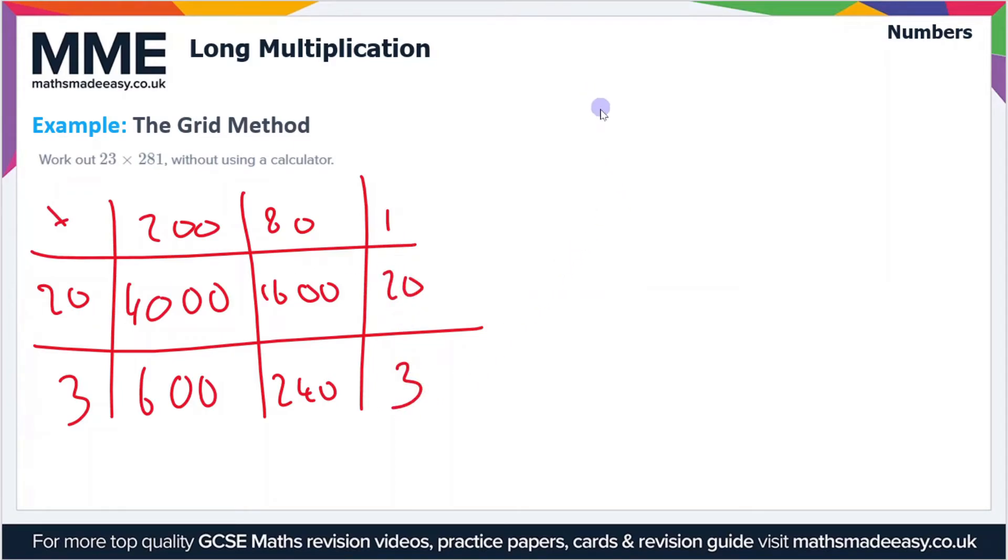If we sum all of these up, we've got 4,000, 1,600, 600, 240, 20, and 3. So the sum of this far right column is 3, and the sum of the middle column here is 4 plus 2 is 6. Then we have 6 plus 6 plus 2—so that's 12 plus 2, which is 14—and we carry the 1.